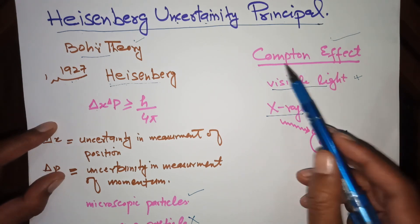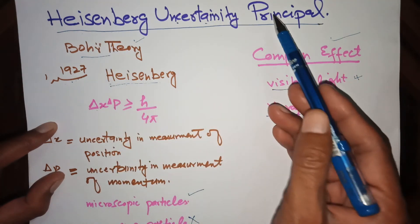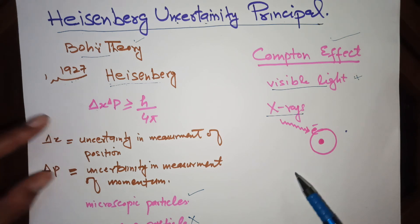So Compton effect can explain the Heisenberg Uncertainty Principle in a better way.